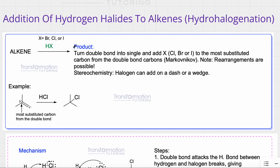I'm first going to give you a trick to easily predict the product, then we'll go through the mechanism and look at some practice. To predict the product, turn the double bond into a single bond, and add your halogen to the most substituted carbon from the double bond carbons. This is Markovnikov's rule.